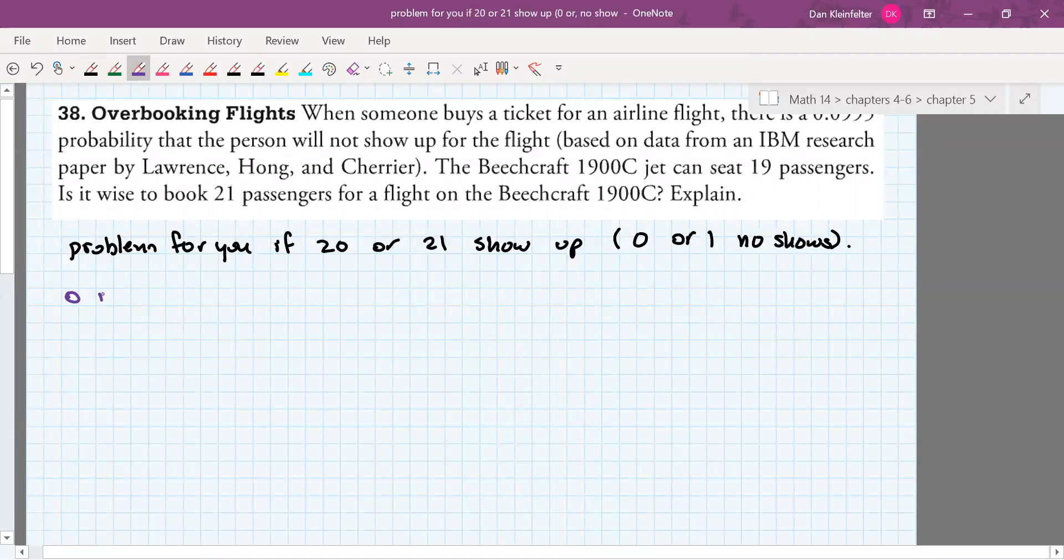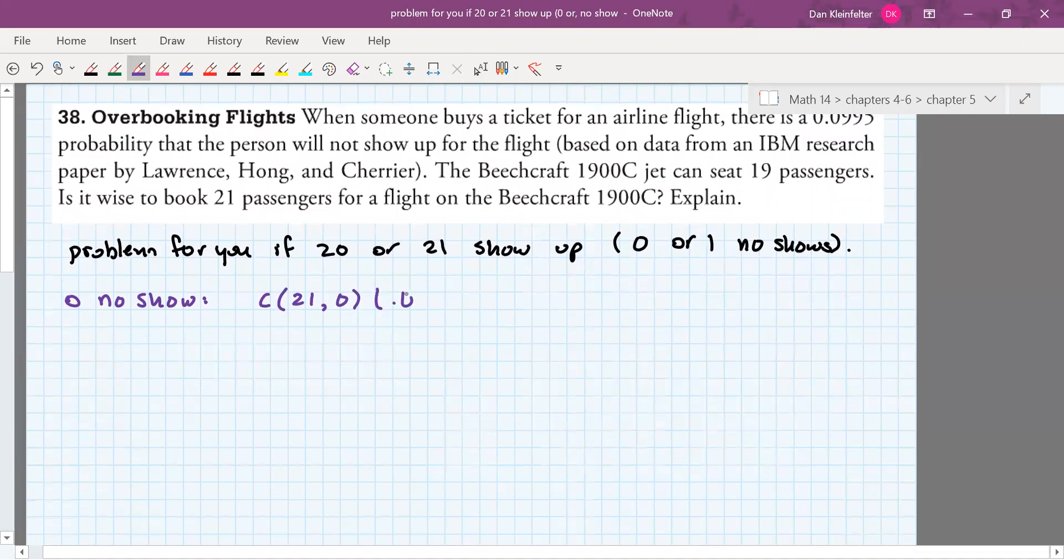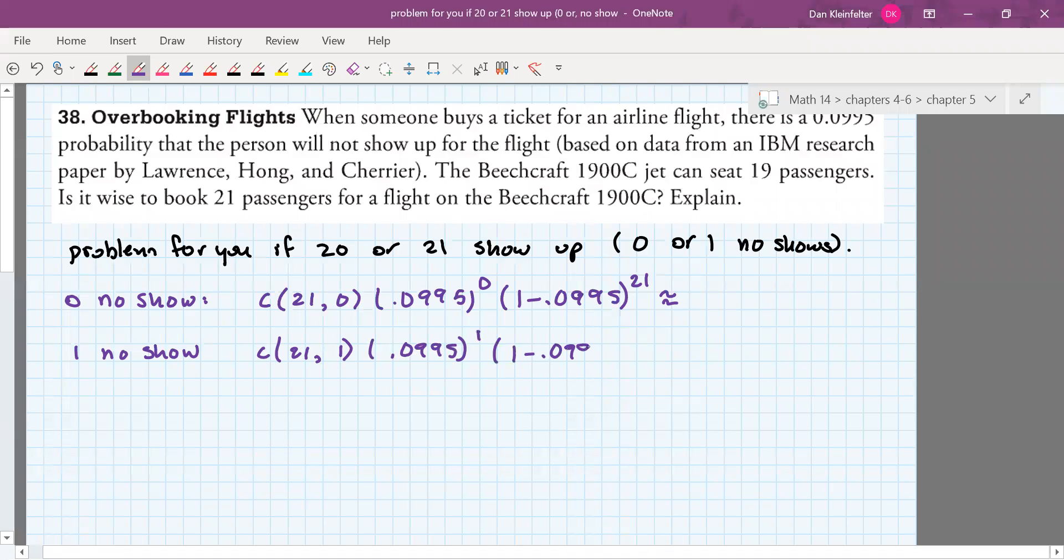So probability of no no-shows. So that's a binomial problem. Out of the 21 booked passengers, we're looking for none to no-show. The probability of someone no-shows is 0.995. That's going to occur zero times. And then the complement, one minus 0.995, that has to occur all 21 times. So we'll calculate that here in a minute. And then for one no-show, that's going to be very similar. We have out of 21 booked passengers, we want one no-show. That will have to occur once. And so we'll have 20 non-no-shows.